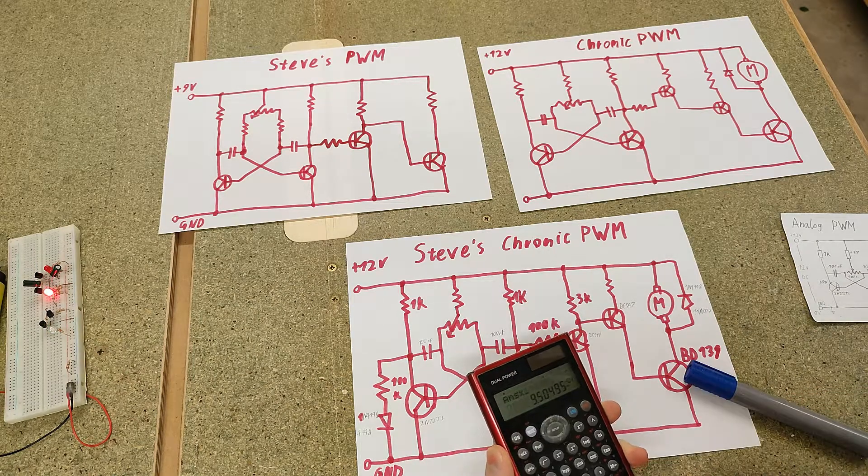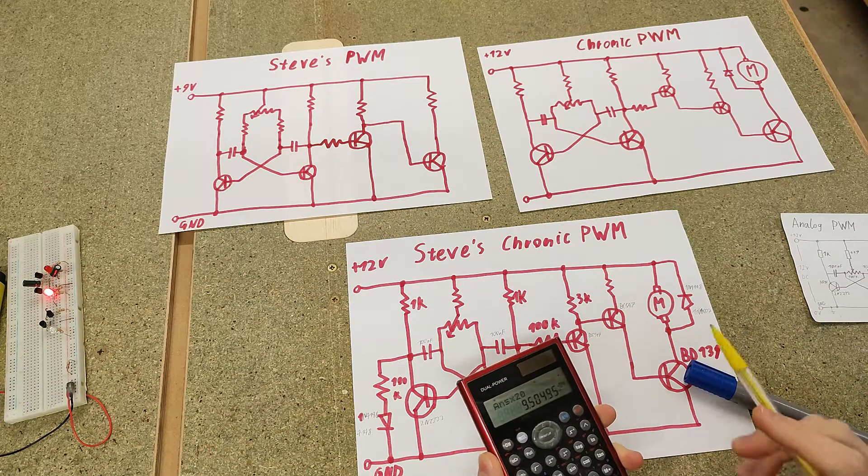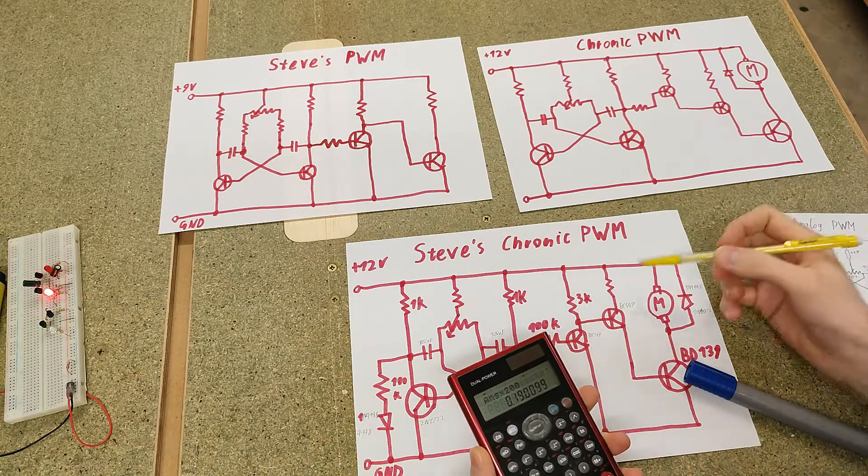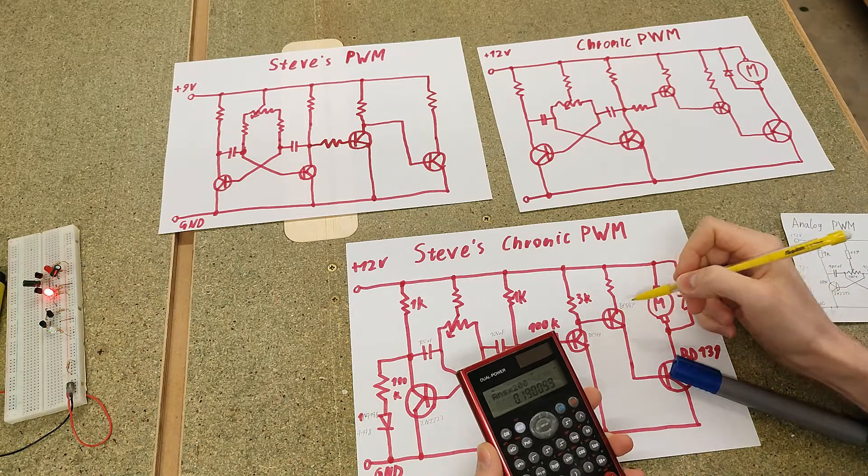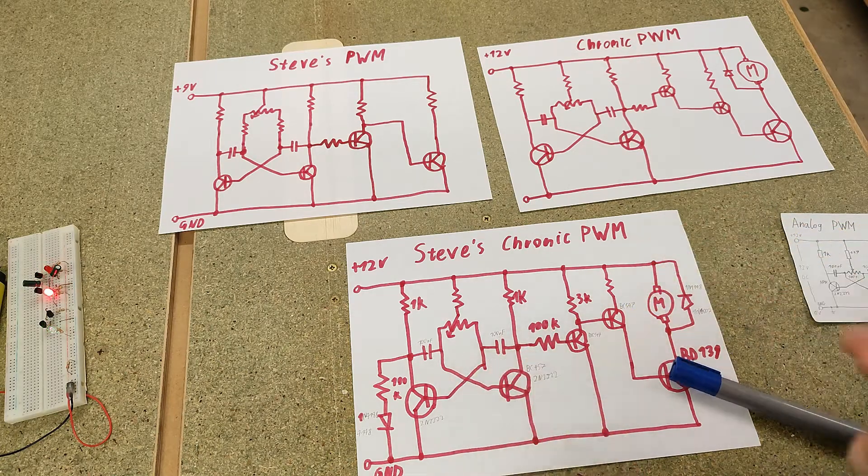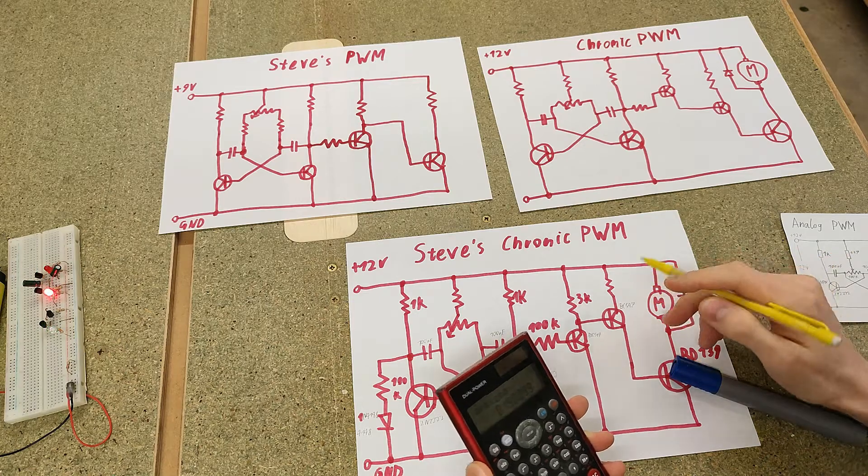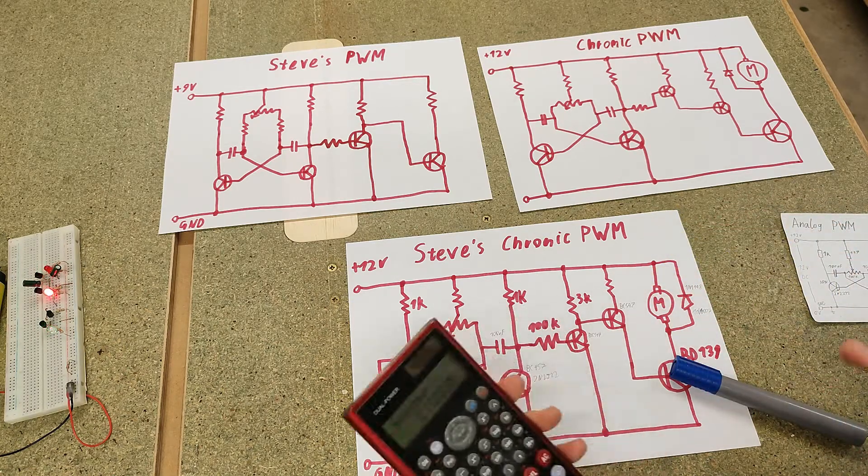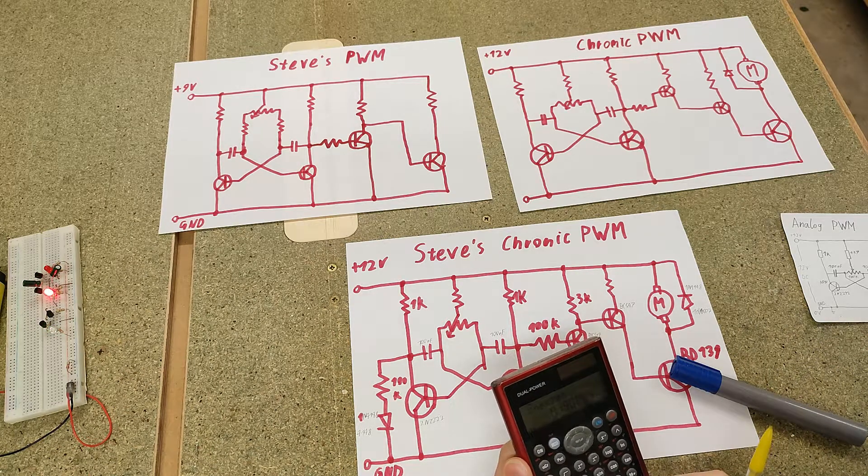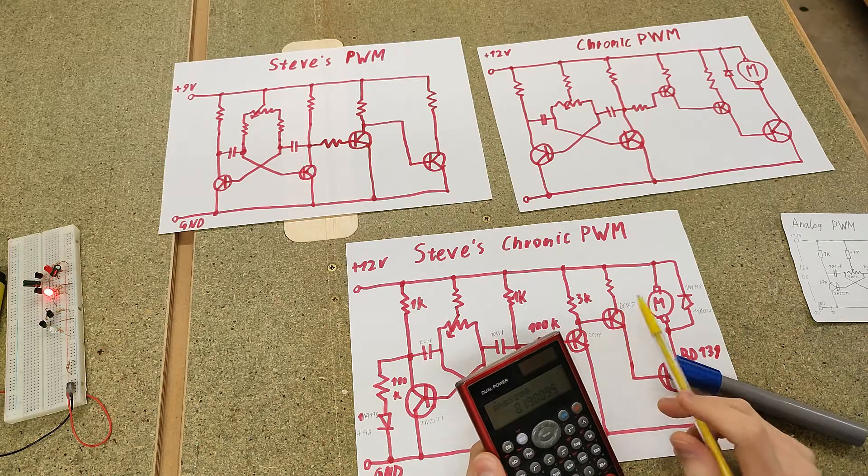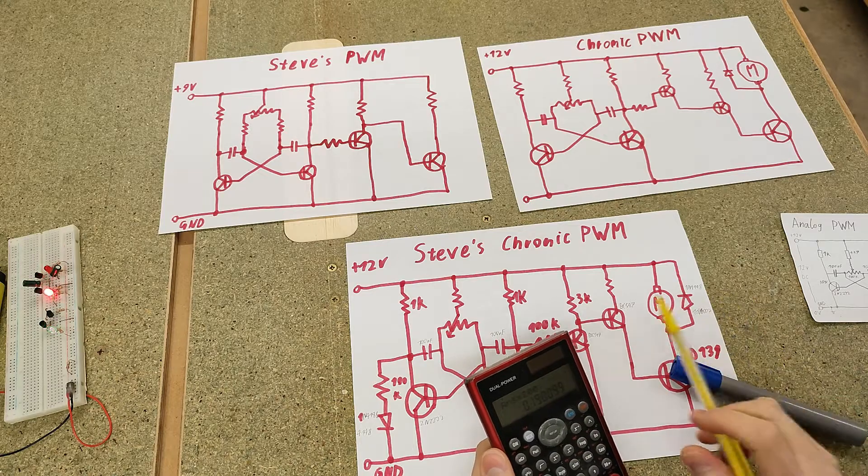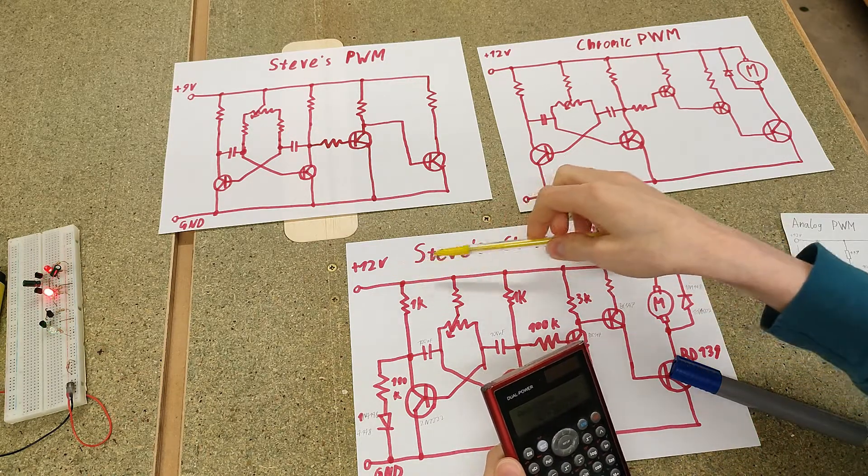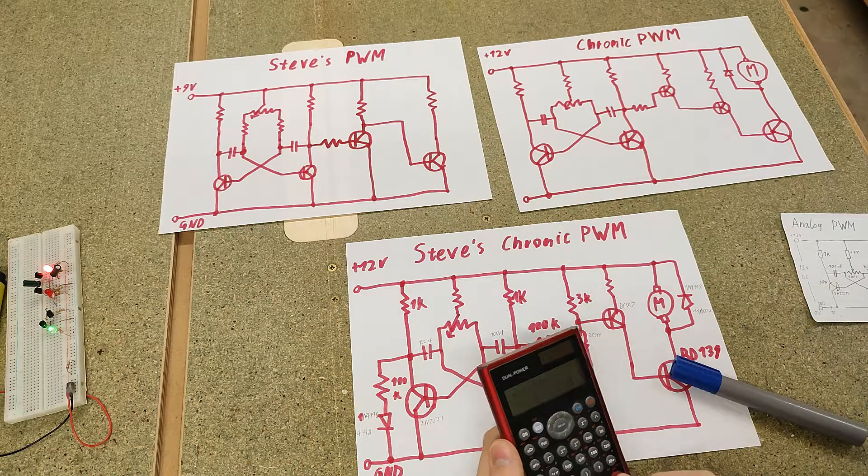Equals some random value. And multiplied by 200, which is the gain of this other BC547. And that's 190mA is what this transistor can switch. Theoretically can switch. Obviously a BC547 can only switch like 100mA collector current. But theoretically it's able to switch up to 190mA.